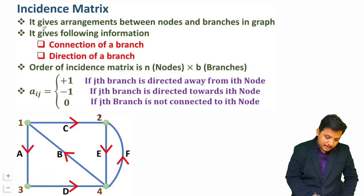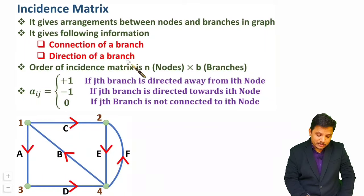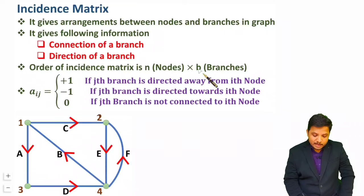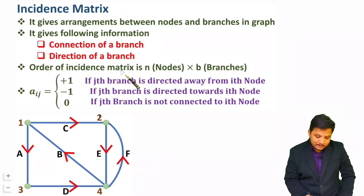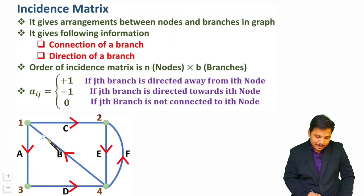Incident matrix explains the arrangement between nodes and branches, giving information about the connection of a branch and the direction of a branch. That matrix has an order of n×b, where n is nodes and b is branches. You should note that you write +1 when a branch is emerging from a node, -1 when a branch is incoming to a node, and 0 when a branch is not connected with a node.